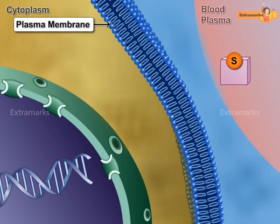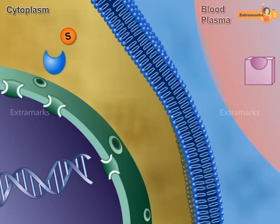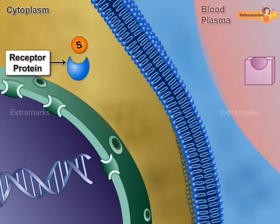When they arrive at their target cell, the steroid hormone dissociates from the carrier proteins and passes through the plasma membrane. The steroid hormone receptors are located in the cytoplasm, but their primary site of action is in the nucleus.